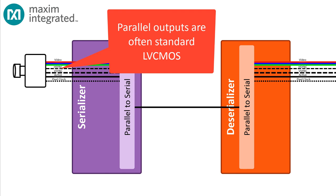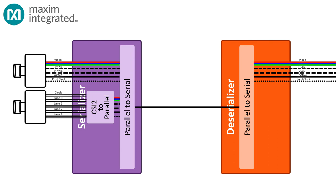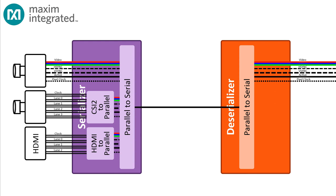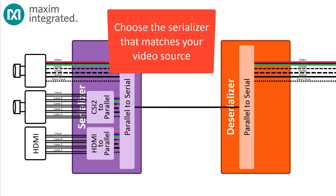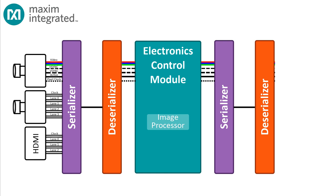If the camera generates a parallel output, then the signals are very likely standard low-voltage CMOS, sampled at the pixel clock frequency — and that could range from a few tens of megahertz to 100 megahertz or maybe even higher. But many modern cameras send their data in a serialized format over one or more data lanes, and HDMI sources send their video and synchronization data over three differential serial lanes as well. So a GMSL serializer may have to do a little deserializing before it can even get to the serializing job.